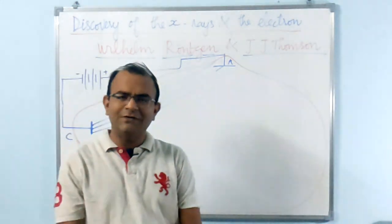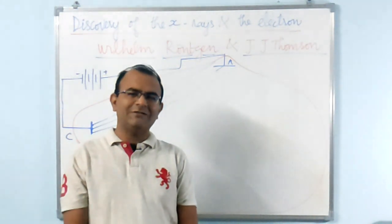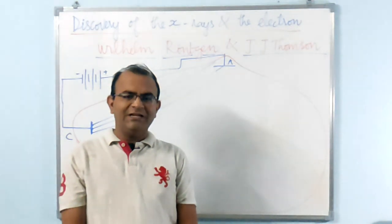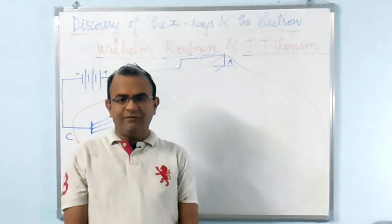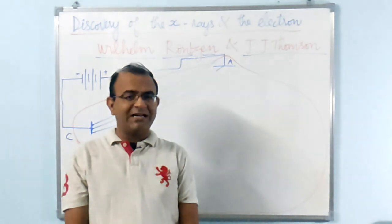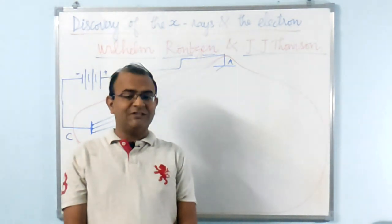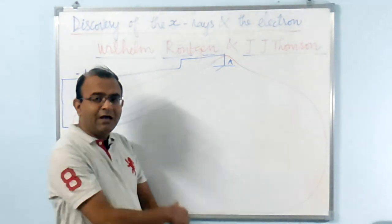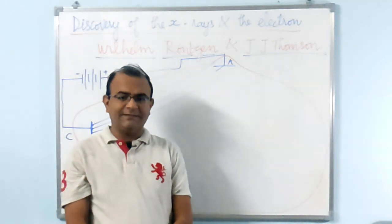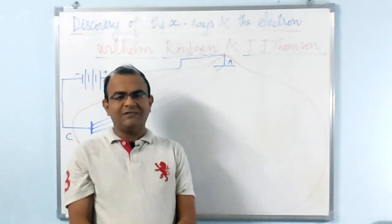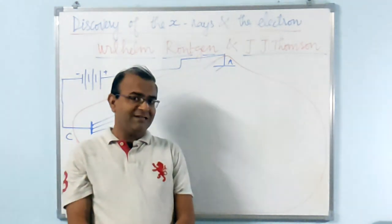Now let us proceed to discuss the discovery of the electron. The discovery of electrons had its origins several years before the discovery of X-rays. J.J. Thomson, working in the prestigious Cavendish Laboratory at Cambridge University, was another of several scientists studying the passage of cathode rays or electricity through gases. The apparatus used by Thomson was similar to the one used by Röntgen as well as several other scientists.